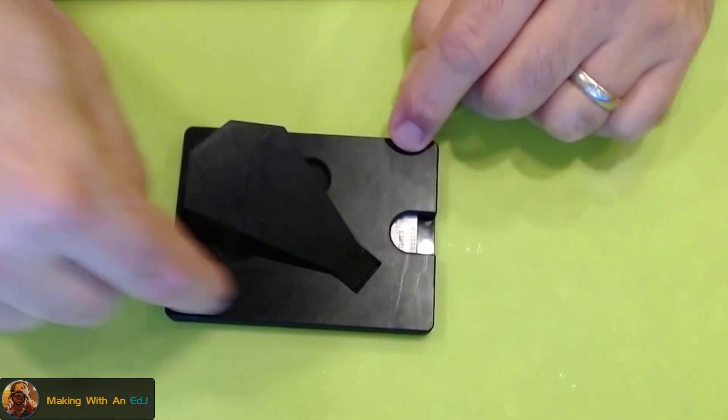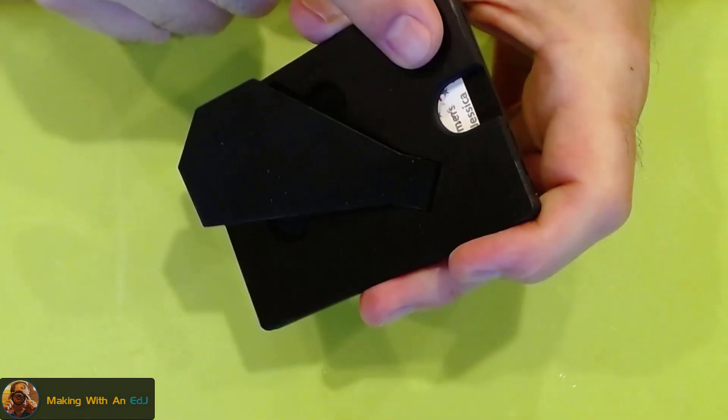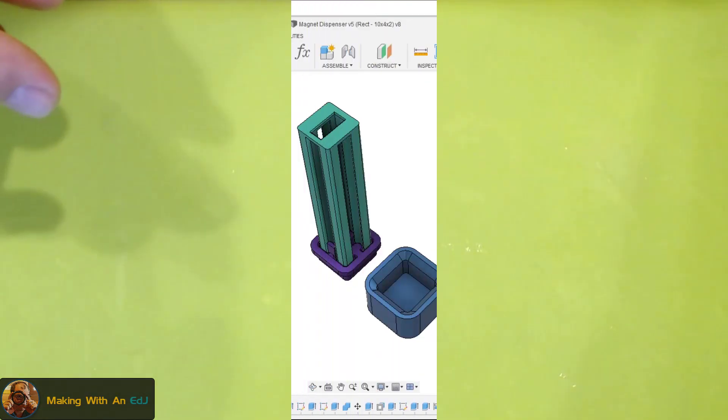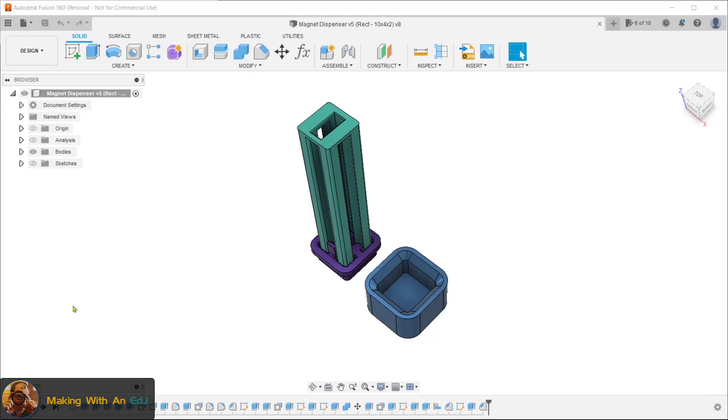So these are the magnets we're embedding in here, and to make this job easier, because polarity is important to keep consistent, I made this in Fusion 360, which resulted in this.